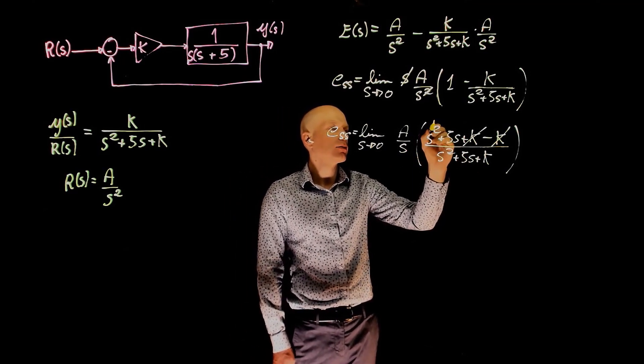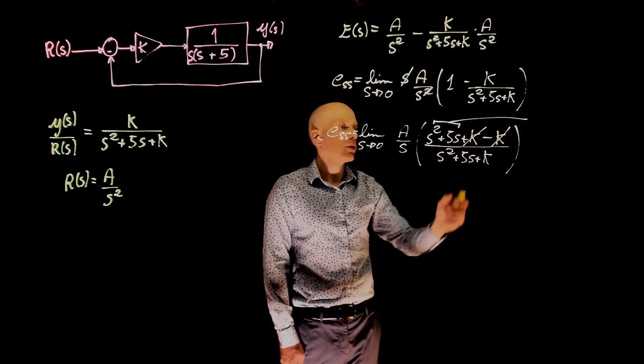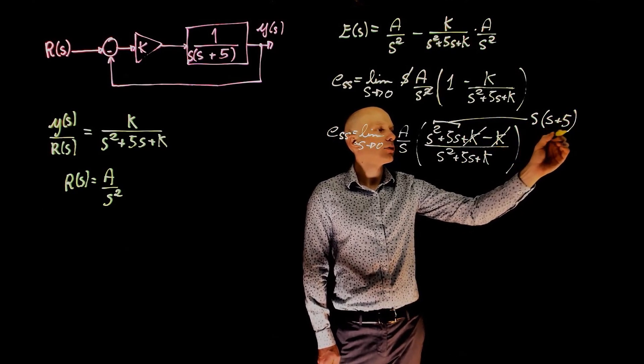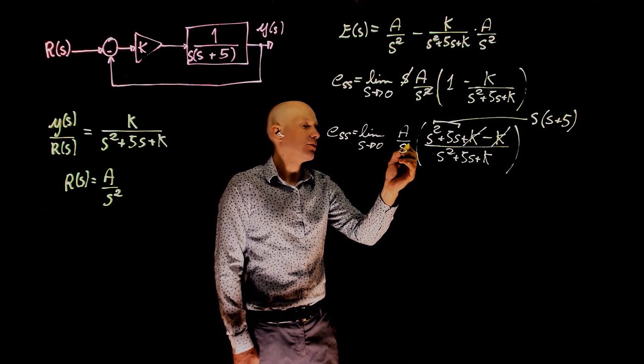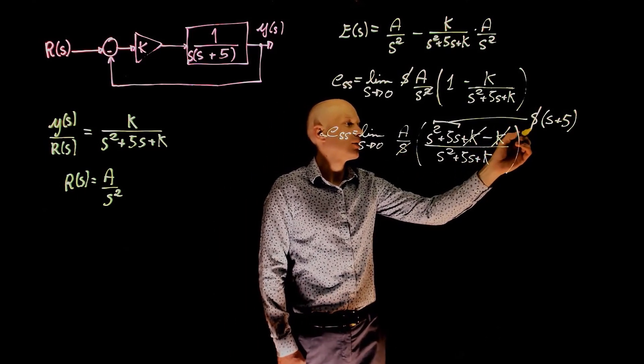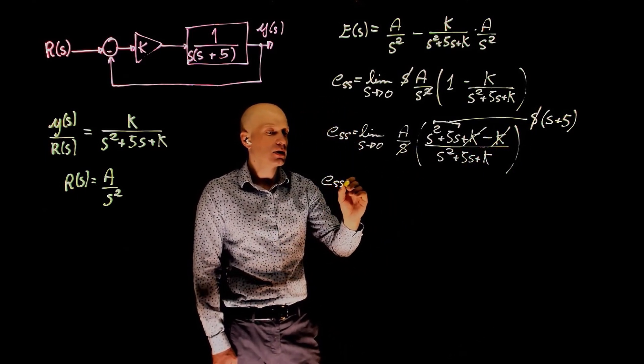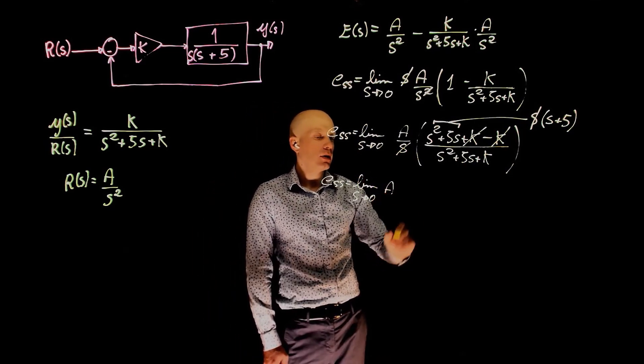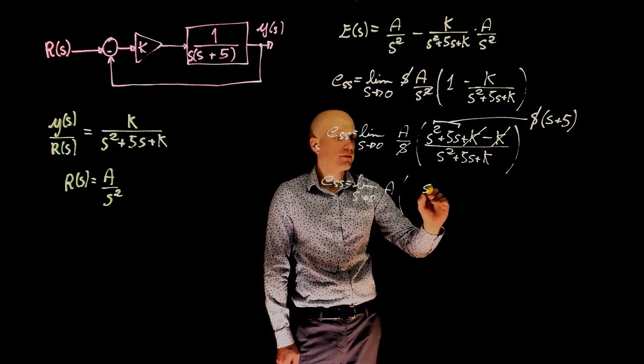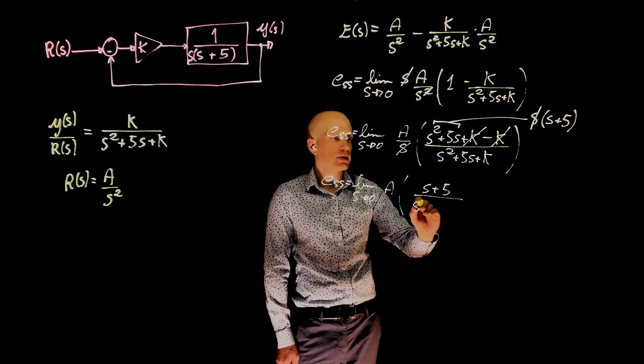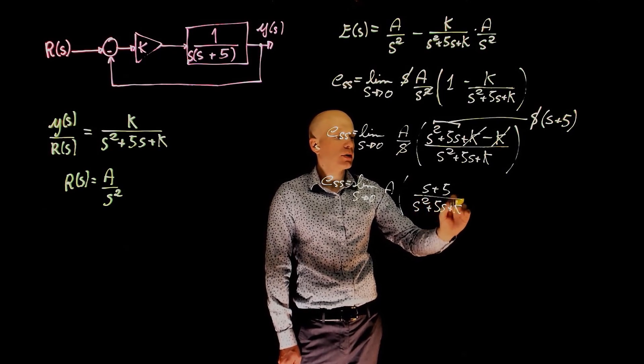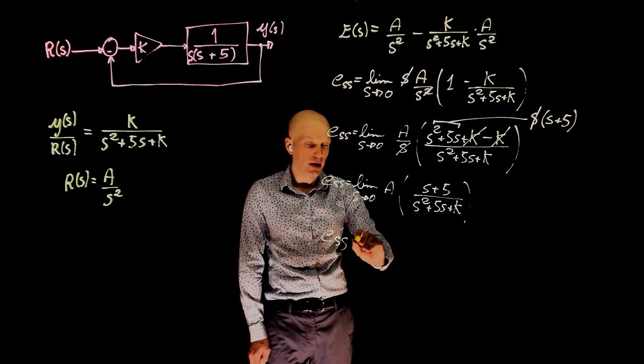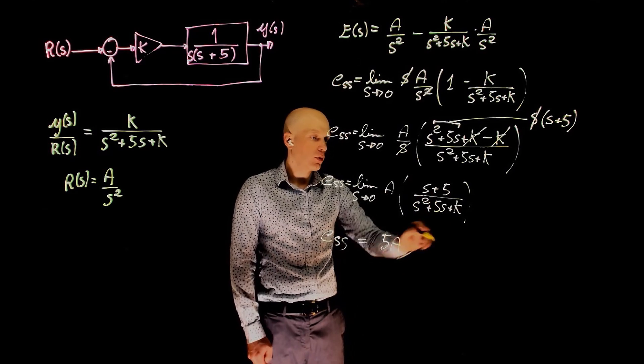Now this S here cancels this S. And the error in steady state is simply the limit when S tends to zero of A times S plus 5 divided by S squared plus 5s plus k. And when S tends to zero, we are left with 5a over k.